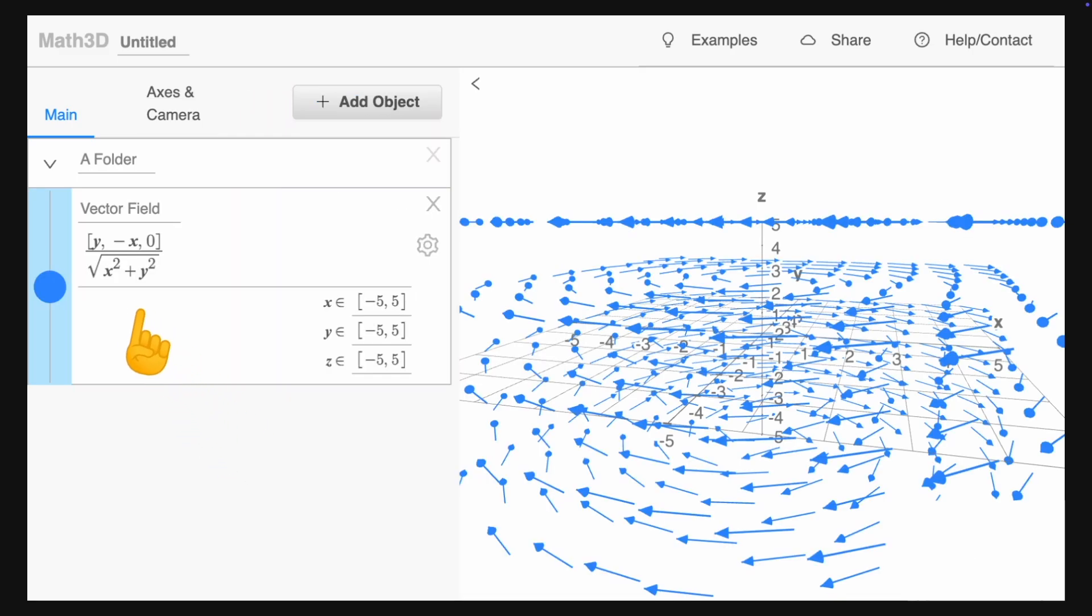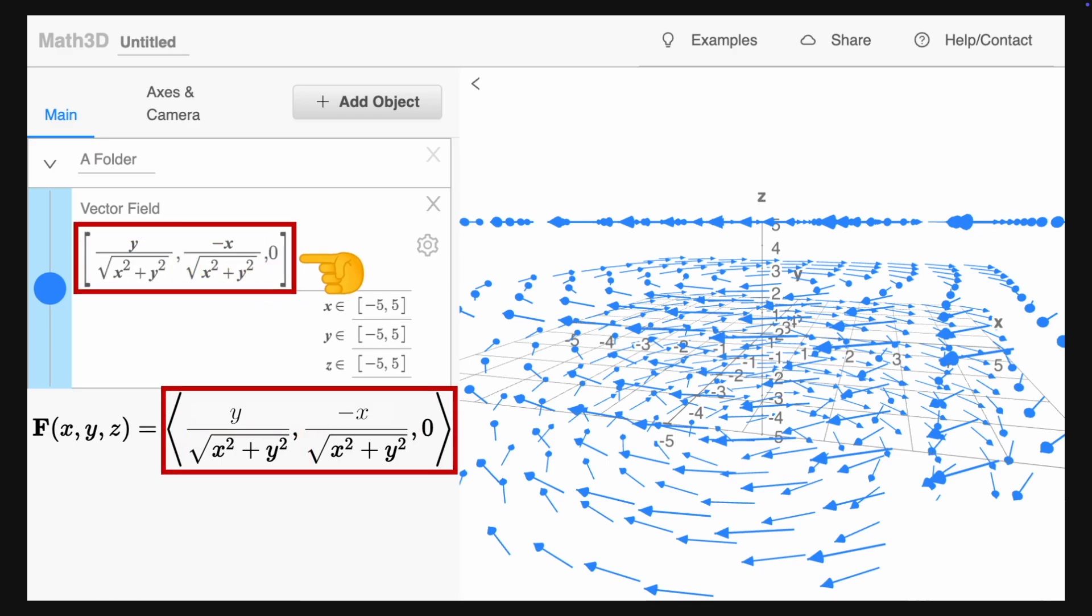You should see the following expression, which defines a vector field, and it corresponds to this vector field. Notice that the expression is divided by the square root of x squared plus y squared, which means that is a common factor. This is equivalent to write each component divided by the square root of x squared plus y squared.